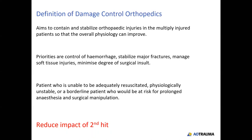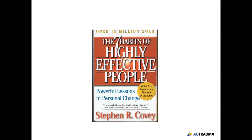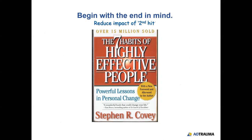The whole idea is to reduce the impact of the second hit — that's what we call the operations we do. Discussing the second hit brings me to another book — Seven Habits of Highly Effective People — which has sold over 15 million copies. One of the seven habits is to begin with the end in mind, and that's very appropriate here, because ultimately you want to reduce the impact of the second hit, and all our interventions are aimed at producing that result.